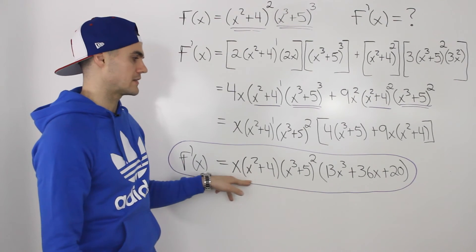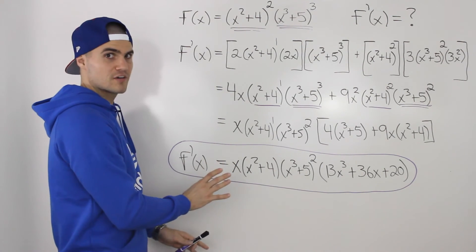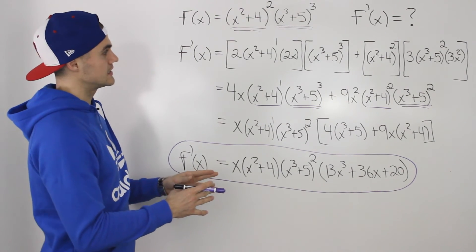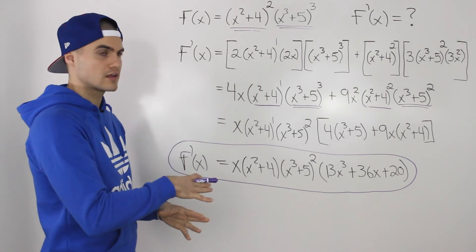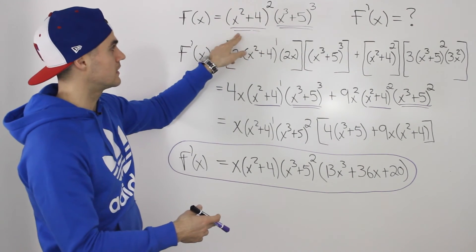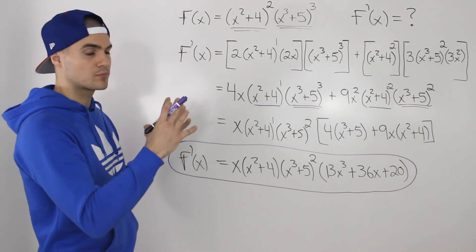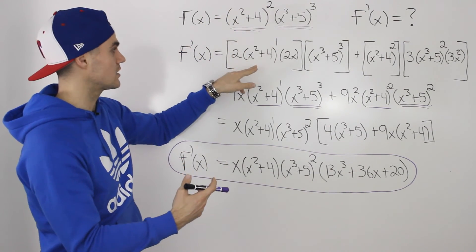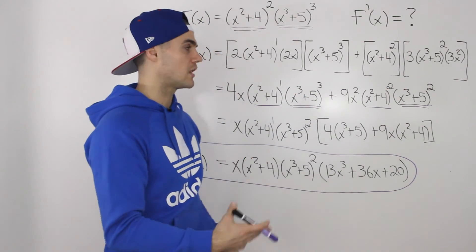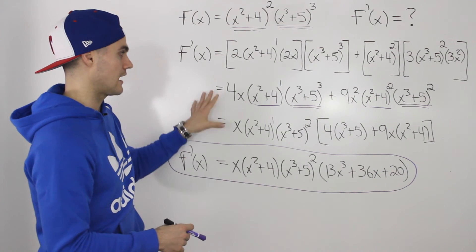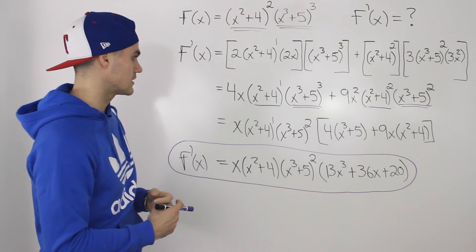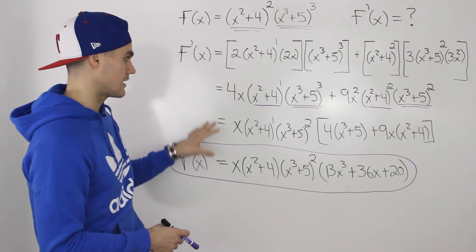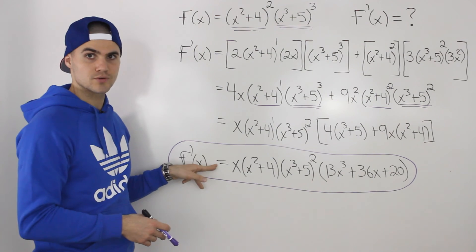Simplifying that big bracket — distributing the 4 inside — and then simplifying to 13x cubed plus 36x plus 20, while all these expressions here remain the same. So this huge expression is the simplified derivative of this function. Basically, what you want to realize is that you had to use the chain rule within the product rule. The first thing to realize is that it's two functions being multiplied by each other, so we apply the product rule. Then within the product rule, because these are composite functions, when we take the derivative of each separate function we apply the chain rule or the power of a function rule. A lot of times your teacher won't want you to simplify, and a lot of times they do, so I thought I'd show both ways. When you simplify and take out like terms, you end up with this final derivative.